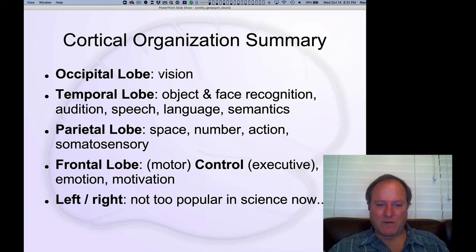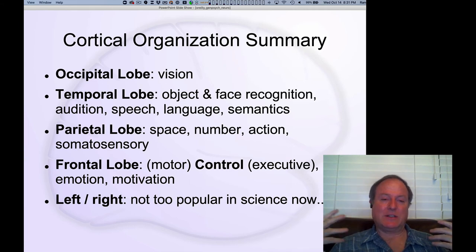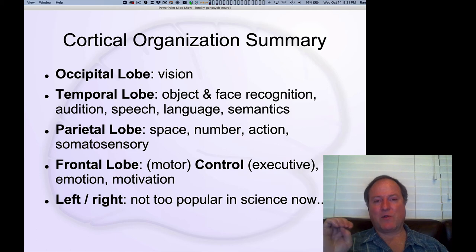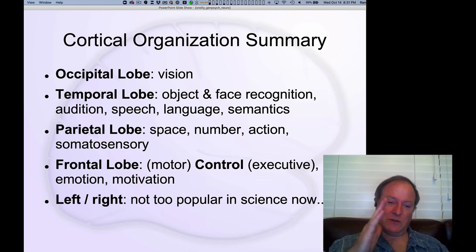Occipital lobe is important for vision. Temporal lobe is important for object and face recognition, also for hearing, audition, speech, language, and semantics. Parietal lobe is really important for space, number, action, and this somatosensory, primary somatosensory S1 part of the brain.